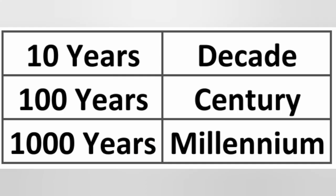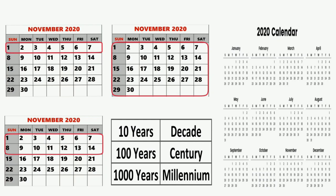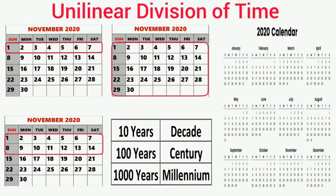Ten years together make a decade. One hundred years together make a century. Ten centuries, that is 1000 years, make a millennium. This is how we measure time. Such a method of dividing time is known as a unilinear division of time.